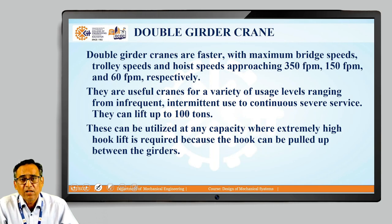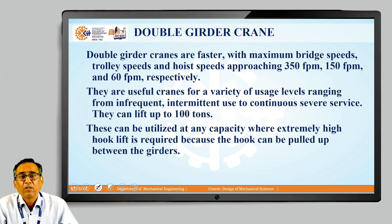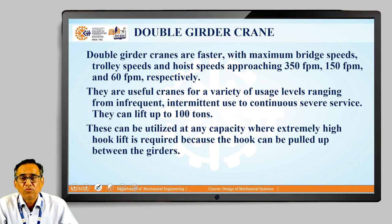Double girder cranes are faster — they can have a bridge speed of 350 feet per minute, a trolley speed of 150 feet per minute, and a hoist speed of 60 feet per minute. These cranes are useful for a variety of uses: regular use, continuous applications, and intermittent applications. They can also lift a variety of loads up to 100 tons.